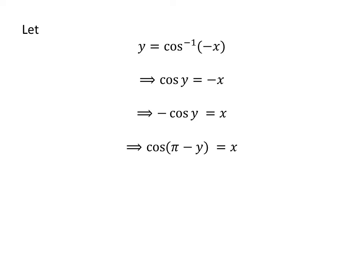The video explaining how to derive this identity is appearing in the upper right corner. Also, the URL address of the video has been mentioned in the description section. So, cosine of pi minus y equals x.